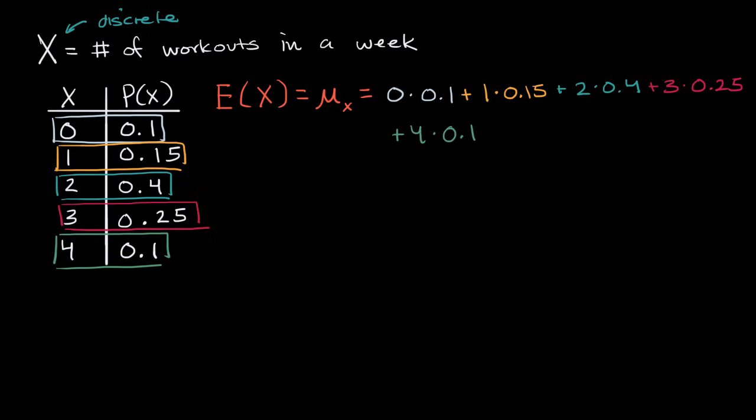Well, we can simplify this a little bit. Zero times anything is just zero, so one times 0.15 is 0.15, two times 0.4 is 0.8, three times 0.25 is 0.75, and then four times 0.1 is 0.4, and so we just have to add up these numbers.